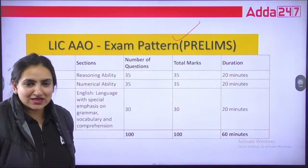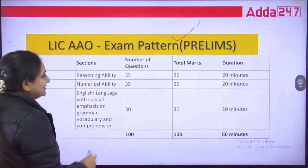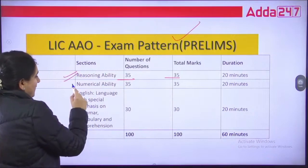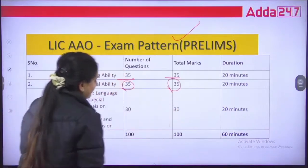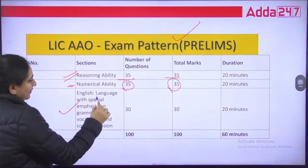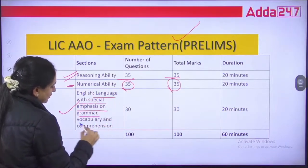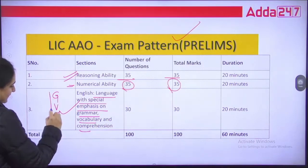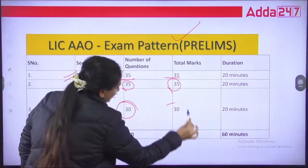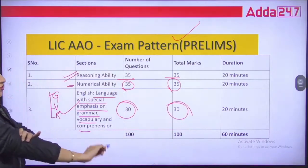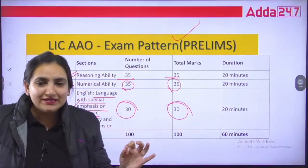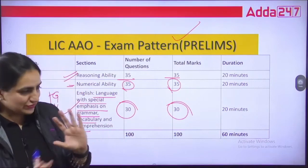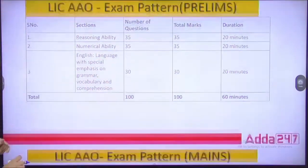Talking about the sections of the prelims exam pattern: you will see 35 questions and 35 marks for your reasoning segment. For numerical ability, again 35 questions and 35 marks. For the English segment — with special emphasis on grammar, vocab, and comprehension — this will have 30 questions and 30 marks. So the total number of questions will be 100, comprising 100 marks, for 1 hour.